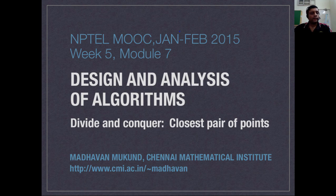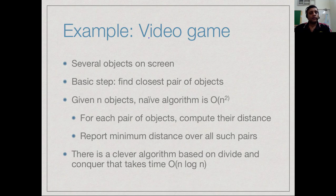We now look at another divide and conquer algorithm. This is a geometric problem: given a set of points, we would like to compute the closest pair of points among them. Recall that at the beginning of this set of lectures, to motivate the need for more efficient algorithms, we considered the example of a video game where there are several objects on the screen and you might want to find at any given point the closest pair of objects among them.